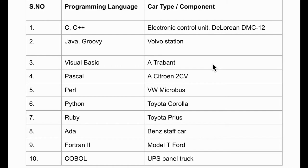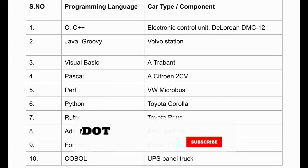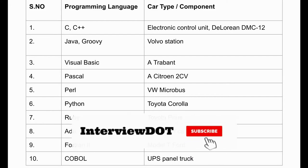The programming languages used include: C, C++, Java, Groovy, Visual Basic, Pascal, Perl, Python, Ruby, Ada, Photon, and Cobalt. I was so surprised that so many programming languages are used inside a car.